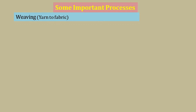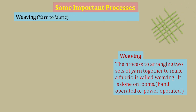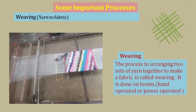The next process is weaving. This is a process for converting yarn into fabric. In this process, two sets of yarns are taken and arranged together to make a piece of fabric. Weaving is done on looms, which can be hand-operated looms or power-operated looms.